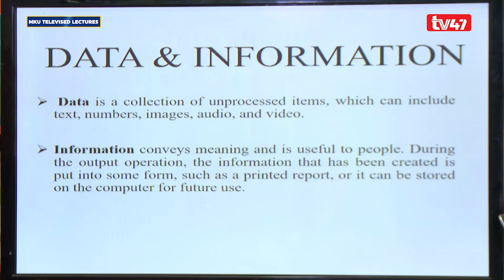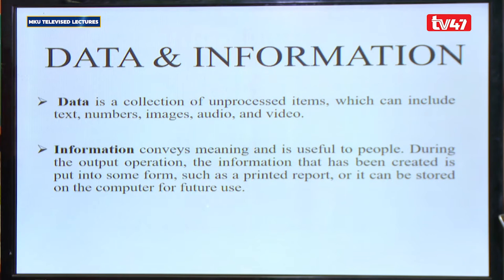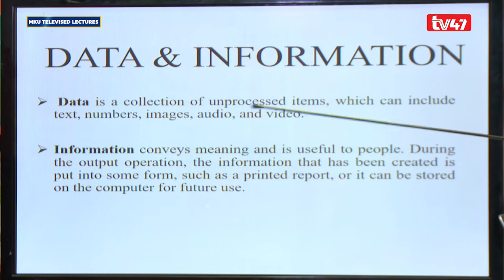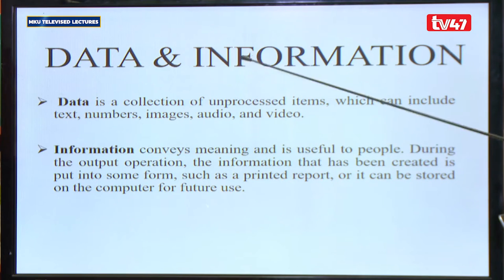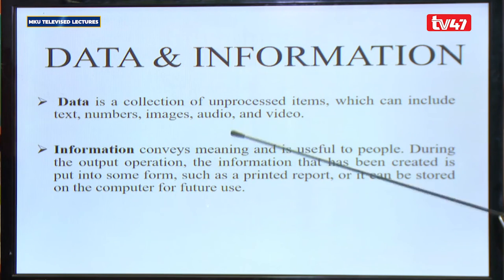We've been mentioning data and information. In ICT, or Information Computer Technology, we use two major words: data and information. These are two different things. Data is a collection of unprocessed items, which can include text, numbers, images, audio, and video. These are raw data or content that has no meaning.